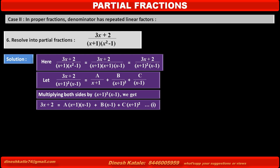Now we have to find the values of A, B, and C. To find the value of B first, we cancel terms of A and C by making their common factor (x + 1) equal to 0. That is, putting x = -1 in equation 1.